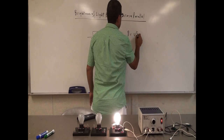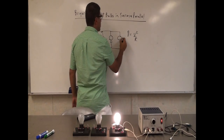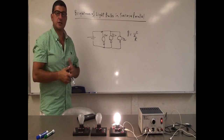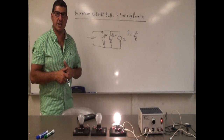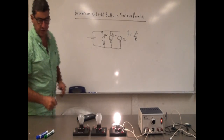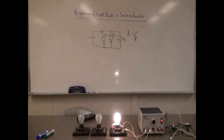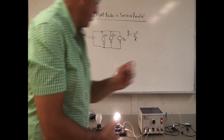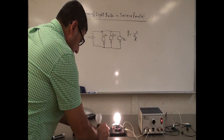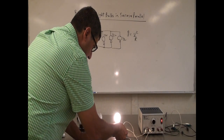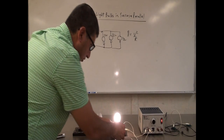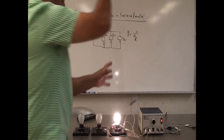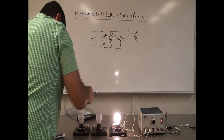If they all have 12 volts across them, their brightness is going to be the same as if there was only one light bulb. The power is going to be V squared over R. If each of them is 12 volts, then it should be just as bright. So to put them in parallel, you keep this light bulb connected — you don't disconnect anything. All you do is connect one of the ends of the light bulb to the other one, and then connect the other end of the light bulb.